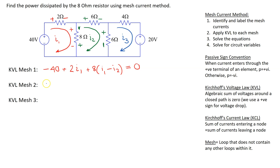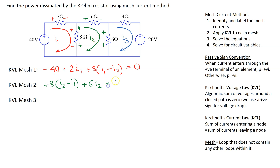The first term is plus 8(I2 minus I1), giving precedence to I2 for the 8 ohm resistor since two currents flow through it. Through the next 6 ohm resistor there is only I2, so this is plus 6I2. Through the third 6 ohm resistor both I2 and I3 flow, so giving precedence to I2 we get plus 6(I2 minus I3) equals zero. This shows how to apply KVL to mesh 2.